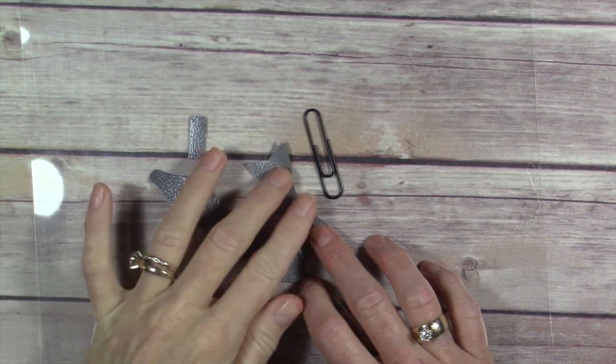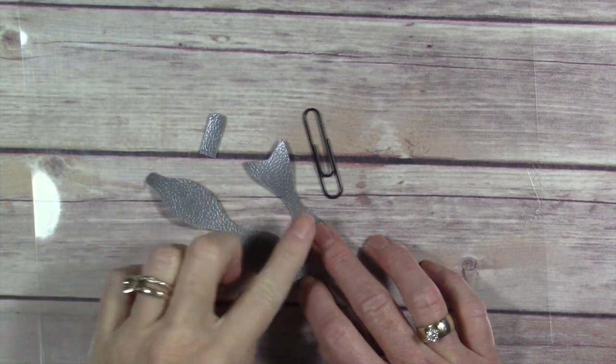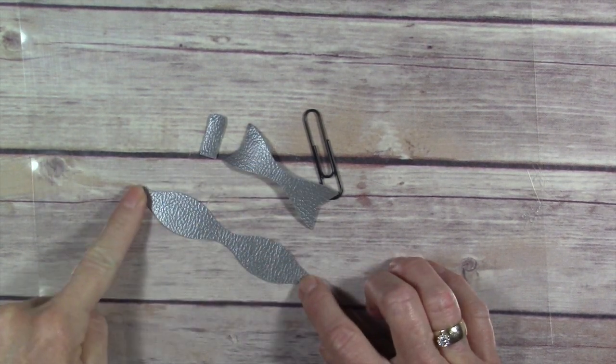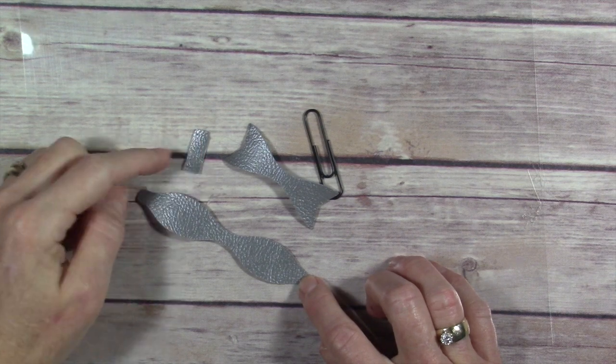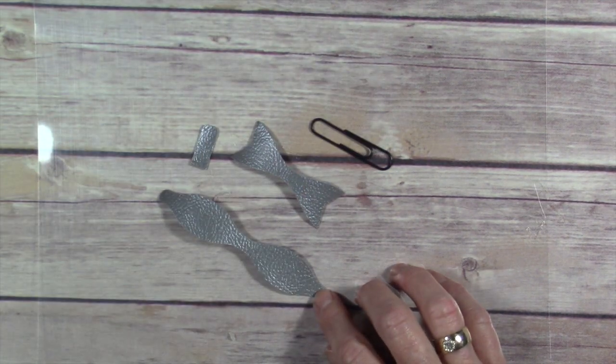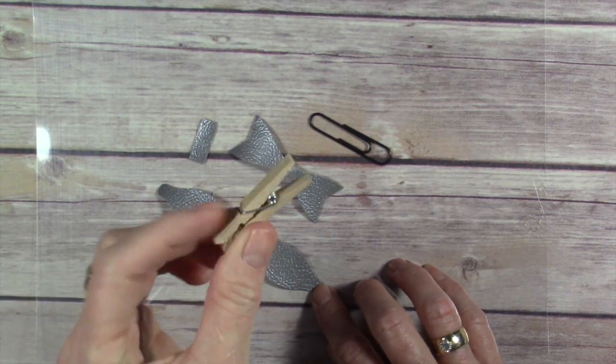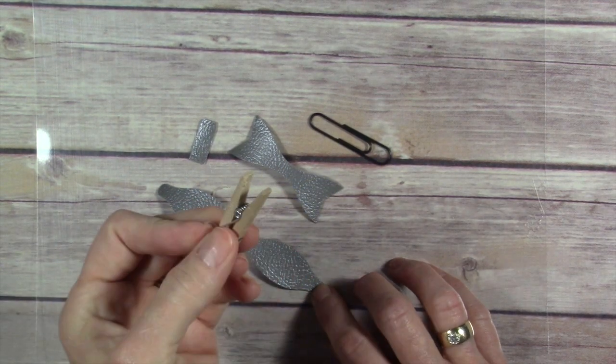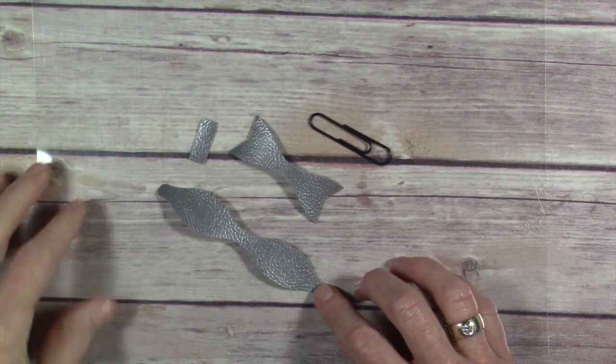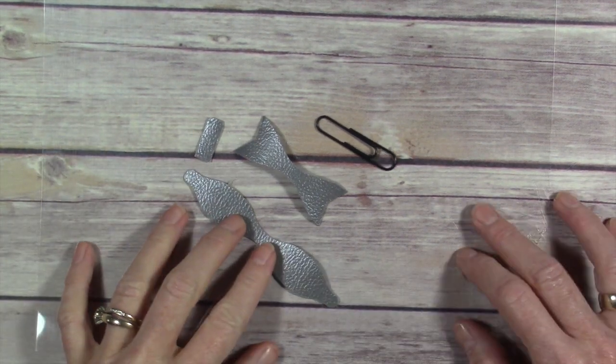We have our three pieces that we cut out of the Cricut faux leather. We have, this is the back of the bow. This is the actual bow itself. And then this is the center of the bow. I've also just got a large paper clip. You could also use one of these mini clothespins or a binder clip or just use it without attaching it to anything. That's perfectly fine. But we're going to make a paper clip.